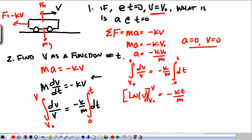And we have now the natural log of V minus the natural log of V0 equals negative Kt over M. The natural log of V over V0 equals negative Kt over M.